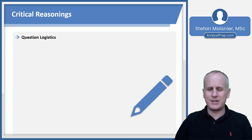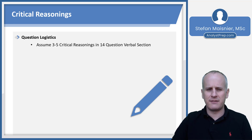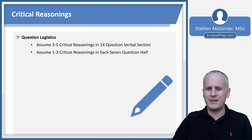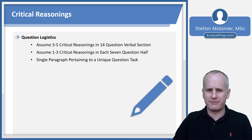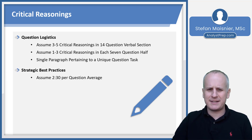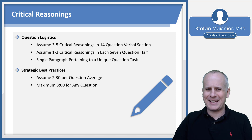Let's first recap the question logistics for critical reasoning on the EA. We've got to assume there are going to be three to five of this question format in the 14-question verbal section. We know that there's going to be one to three of them in each seven-question half, and there's always going to be a single paragraph pertaining to a unique question task. Our best practices: assume about two minutes, 30 seconds per question — more than any other format on the verbal section — but you still have a hard cap of three minutes for any individual critical reasoning question.